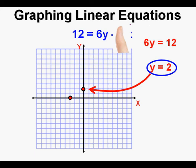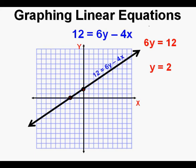We graph the line by drawing it through the two points. This is the graph of the equation 12 equals 6y minus 4x.